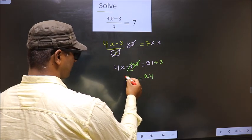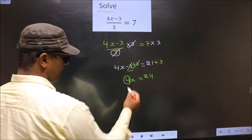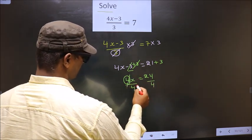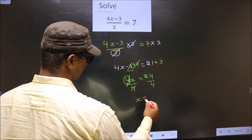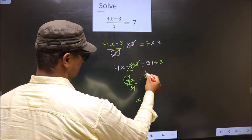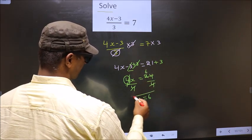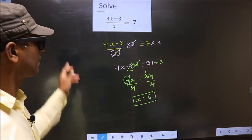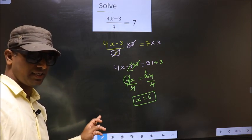Now to get x, you should remove 4. So to remove 4, you divide by 4. So this cancels out and x equals 24 divided by 4, which is 6. So this is our answer. Am I clear?